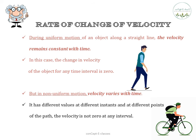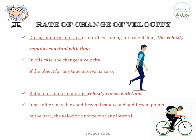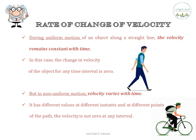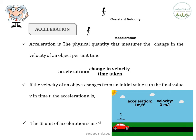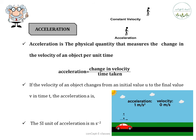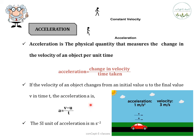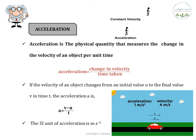Whereas in the case of non-uniform motion, the velocity varies and changes with time — it has different values at different instances and at different points of the path. In simple words, during uniform motion the velocity remains constant, whereas in non-uniform motion the velocity varies with time. This change in velocity with respect to time is called acceleration. Acceleration is a physical quantity that measures the change in velocity of an object per unit time.